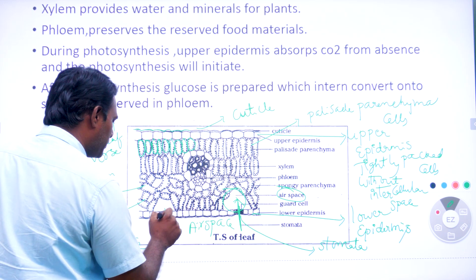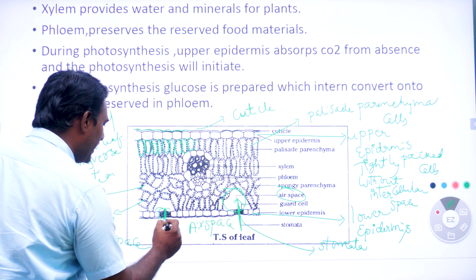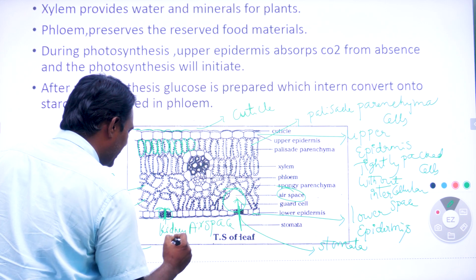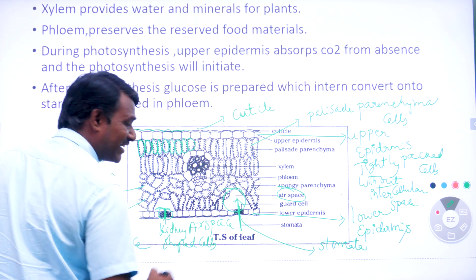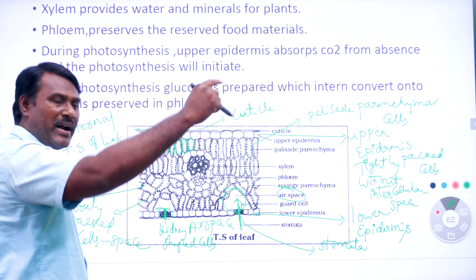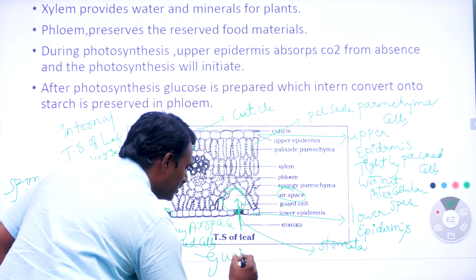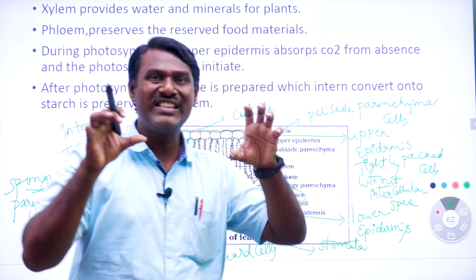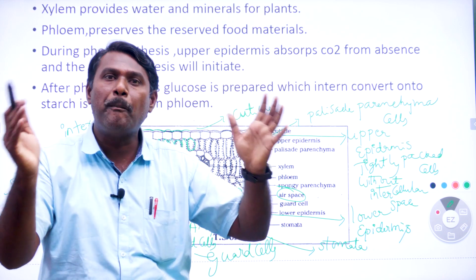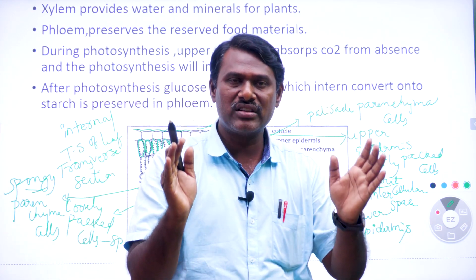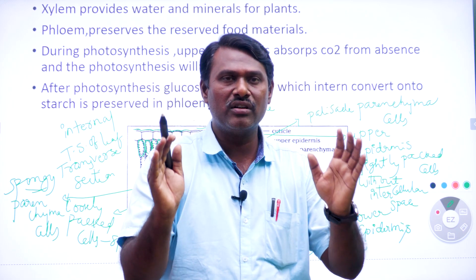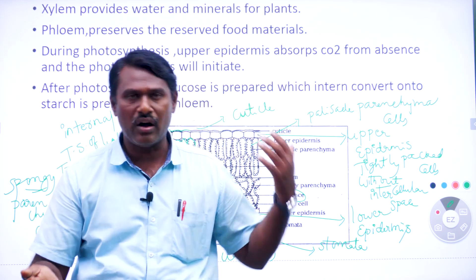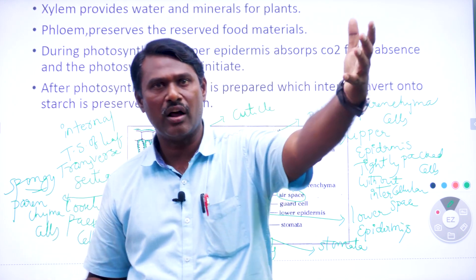In the lower epidermis we have small space-like structures called stomata, surrounded by kidney-shaped cells. These kidney-shaped cells which surround the stomata are called guard cells. Guard cells are very important for the opening and closing of the stomata. Stomata is useful in exchanging gases — intake of carbon dioxide and releasing of oxygen to outside after photosynthesis.